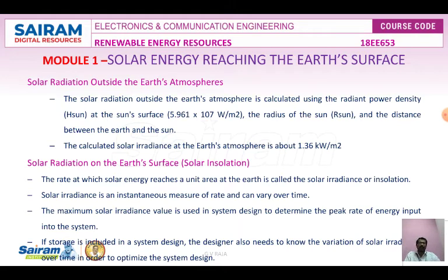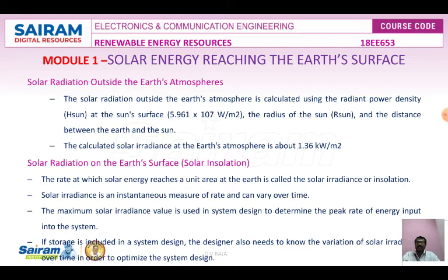Next we look at solar radiation outside the Earth's atmosphere. This is the measurement of energy radiation received from the Sun outside the Earth's atmosphere, denoted as ISC. The solar constant is the rate at which energy is received from the Sun on a unit area perpendicular to the Sun's rays at the mean distance between the Sun and Earth.